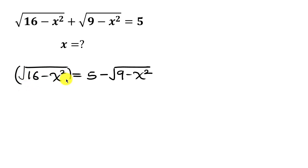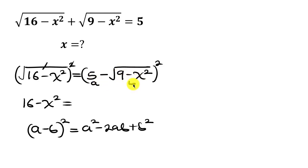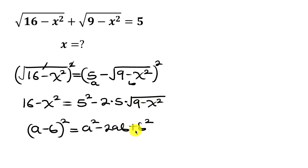I'll square the left hand side and also square the right hand side. This square cancels out the square root, leaving behind 16 minus x squared. The right hand side is of the form (a minus b) squared, which expands as a squared minus 2ab plus b squared. Here 5 is like a and the square root of (9 minus x squared) is like b, so this gives 5 squared minus 2 times 5 times the square root of (9 minus x squared), plus the square root of (9 minus x squared) squared.